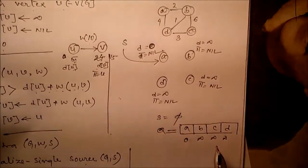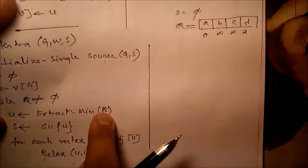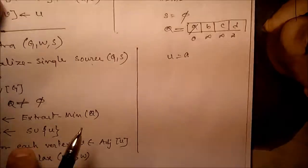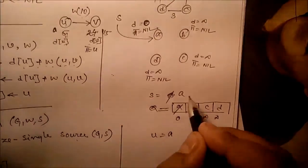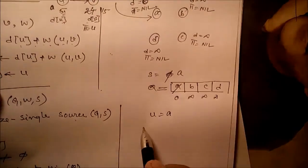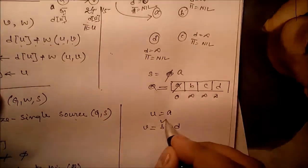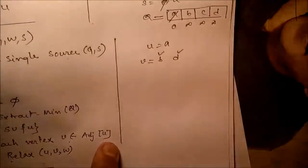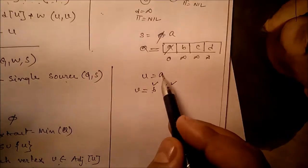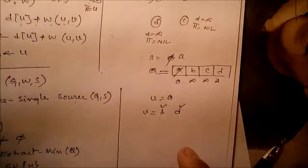While Q ≠ φ, extract the minimum from Q. The minimum is a, so u = a. S = S ∪ {a}. For each adjacent vertex of a — which are b and d — we apply relax(a, b, w) and relax(a, d, w).